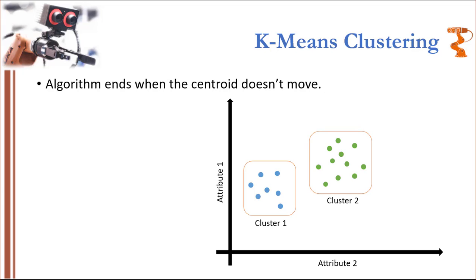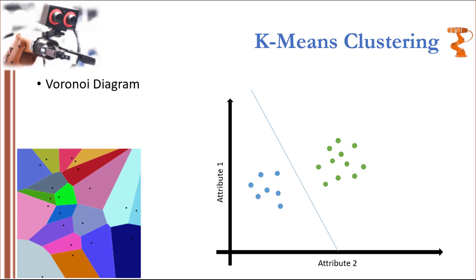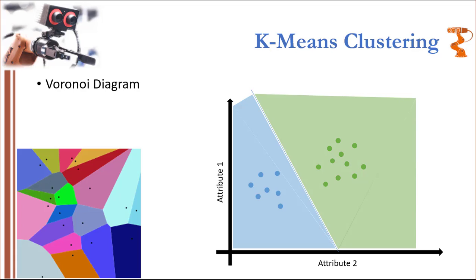The only input we provided was the number of clusters. There are algorithms that can automatically decide how many clusters to use, but that would be mathematically extensive so I'm not going to cover that. In other words, we have created a Voronoi diagram in which regions are divided and every cluster is shown by a region. This example used only two attributes and two clusters, but things can get much more difficult to visualize if the number of attributes and the number of clusters grow.